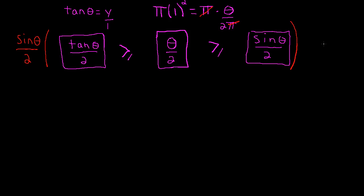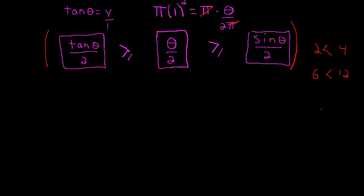Just to make sure we can do that and maintain these relationships: if I have 2 and 4, and I multiply everything by 3, I get 6 and 12 — that relationship is still maintained. This is a first-quadrant angle, so 2 over sine of theta is a positive value, meaning all these inequality relationships are going to be maintained.